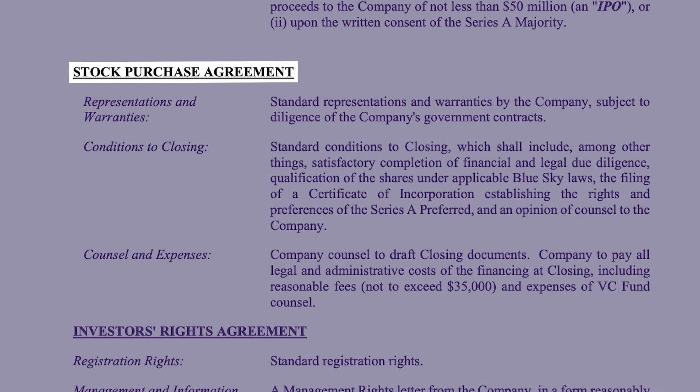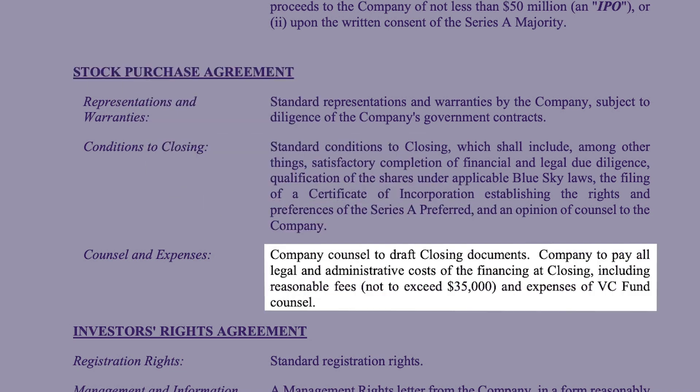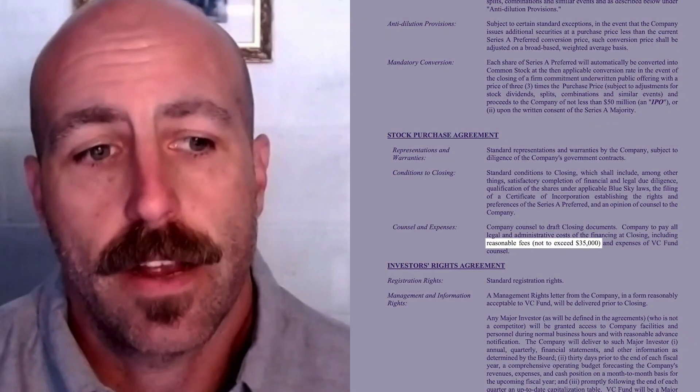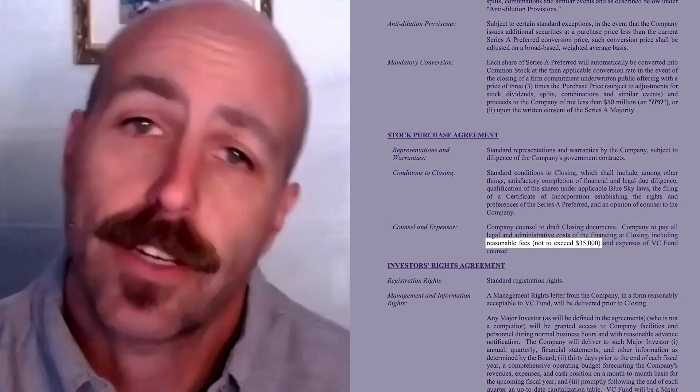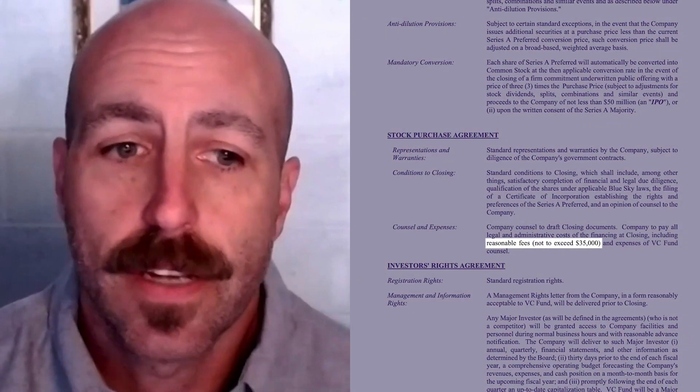One thing a lot of people are surprised to find out is that they have to pay their investors' legal fees in association with the round. It's just the way things are done — they're giving you the money, and you have to turn around and give some of it back to cover their legal costs. We've got a number of $35,000 in here for investor-side fees, which is pretty standard for a Series A.